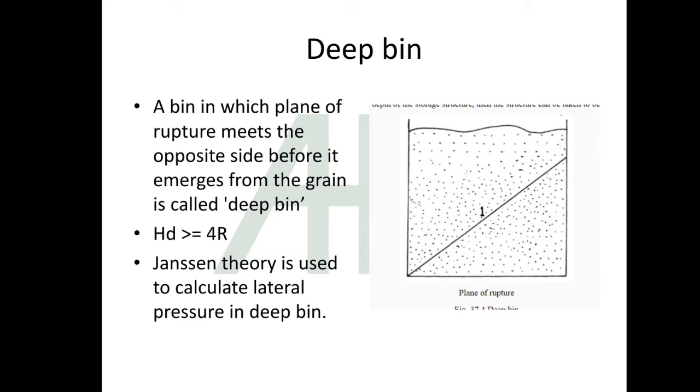Deep bin: a bin in which plane of rupture meets the opposite side before it emerges from the grain is called deep bin. For deep bin, the diameter should be greater than or equal to 4 times hydraulic radius of that bin.